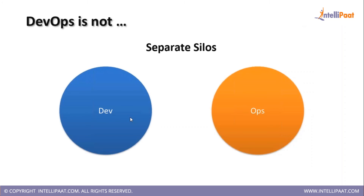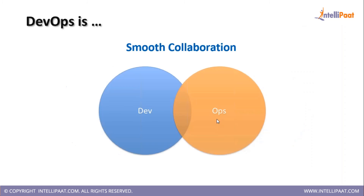DevOps is not separate silos. It is not only dedicated to dev or ops — it is something wherein you have smooth collaboration between a development team and operations team. Developer teams do the coding and build it, but without proper interaction with operations, the release management and upgrades will not be handled properly. Lots of challenges arise when something happens to an application after it's released to production — the production team says 'this is not my problem' and puts the blame on the developer team.